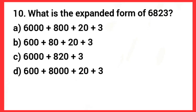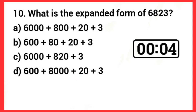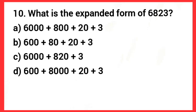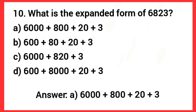Next one: What is the expanded form of 6,823? Answer: Option A — 6,000 plus 800 plus 20 plus 3.